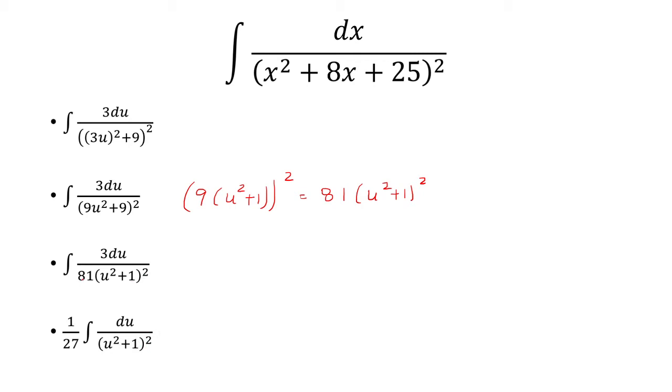And now 3 over 81 is just 1 over 27. And we're going to factor that out.